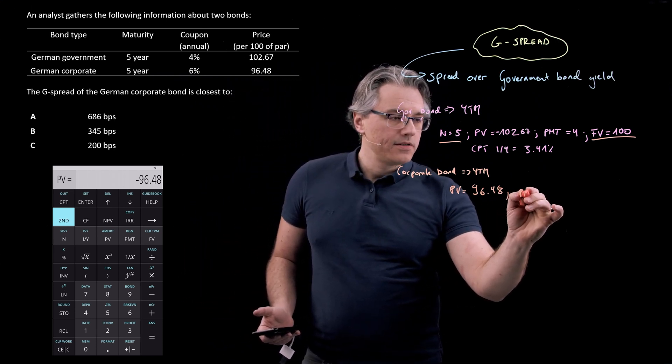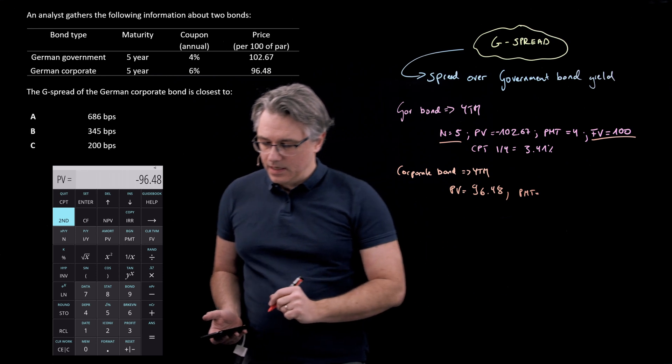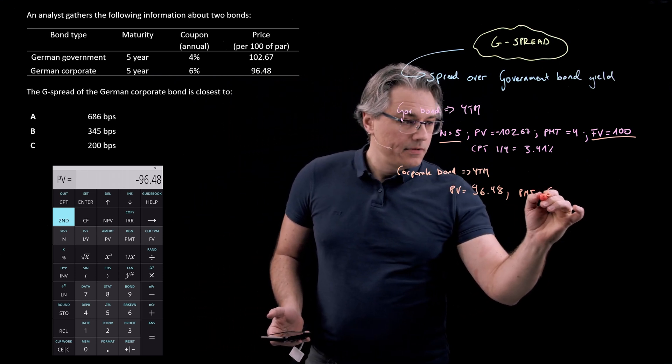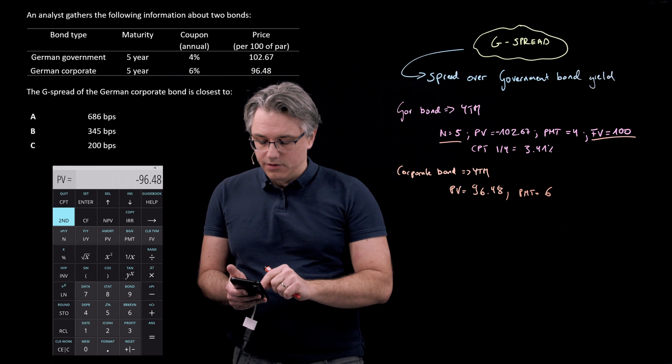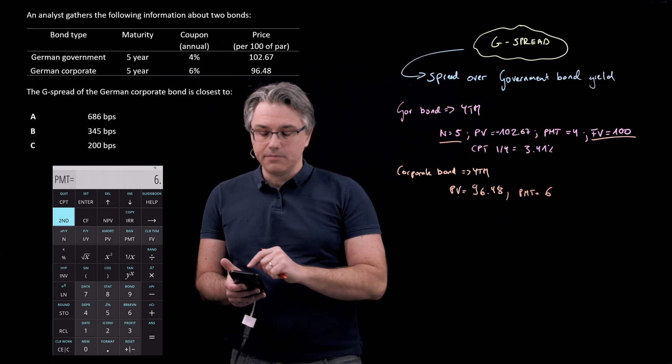The PMT, the size of the coupon is different. It's 6%. So I'm going to set PMT at 6. So I do this as 6, followed by the PMT key.